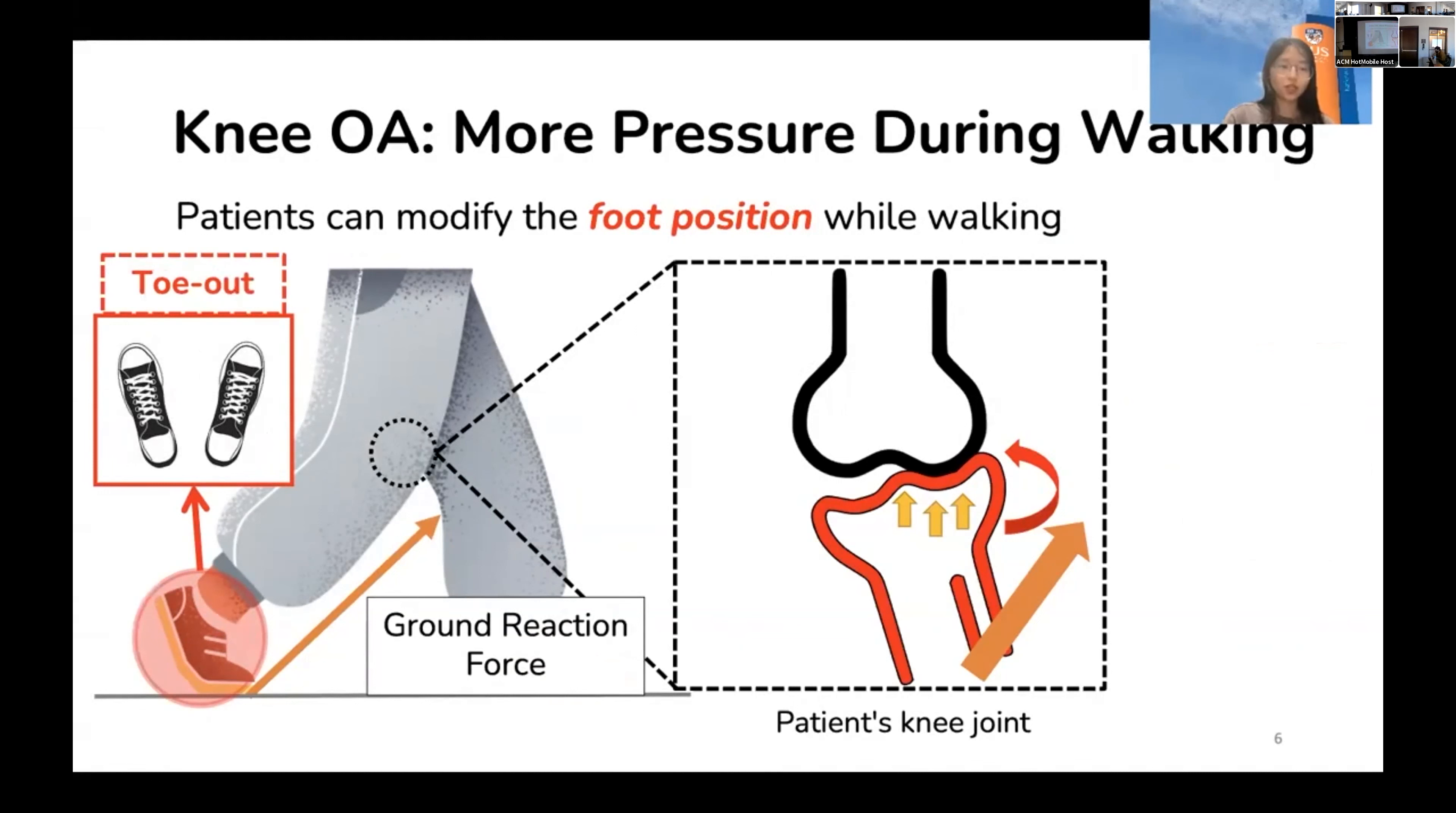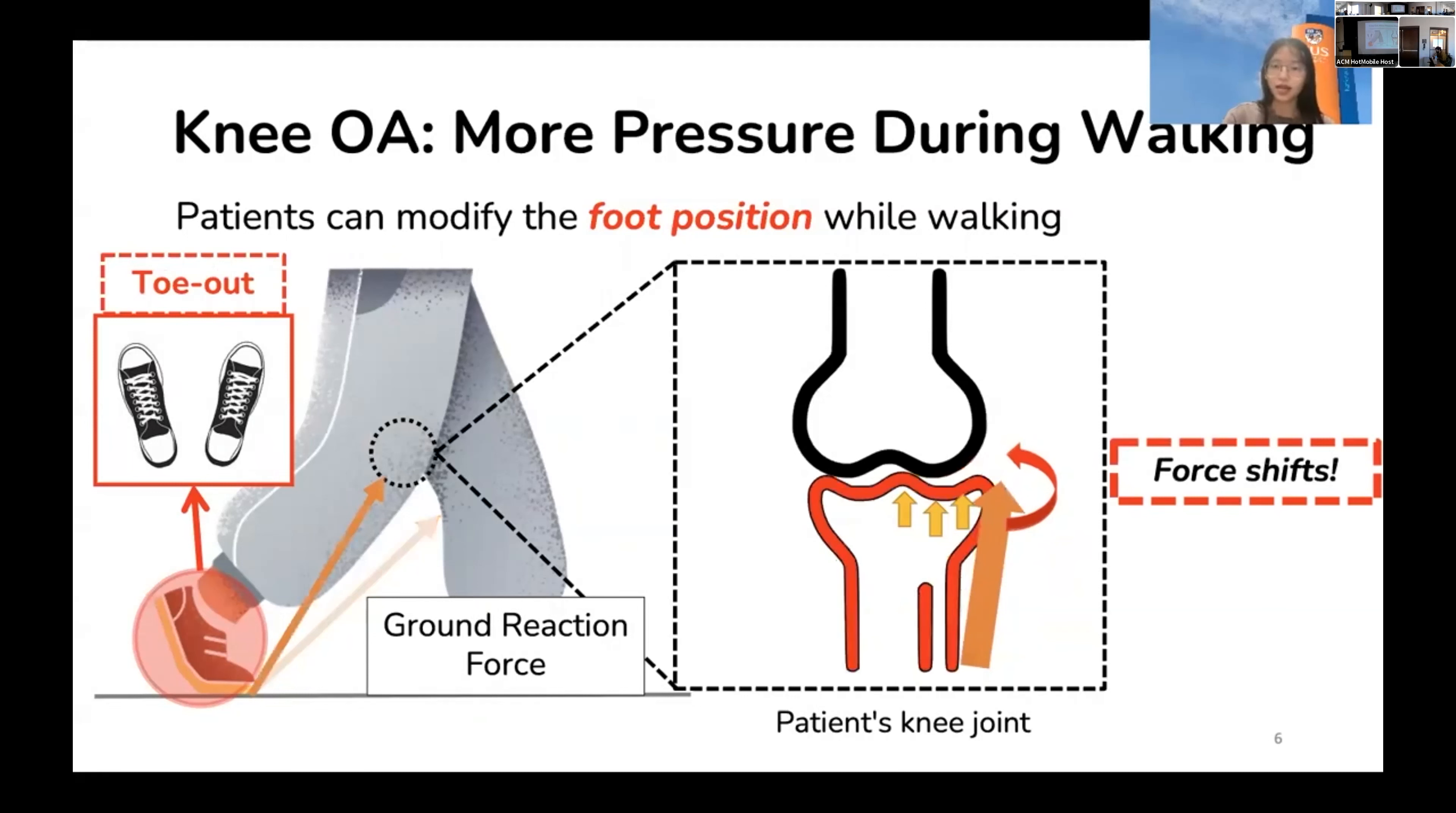When patients walk toe-in or toe-out, they're actually shifting the ground reaction force closer to the knee joint, which in turn induces less rotation. As a result, part of the pressure is shifted to the side that has more joint space and prevents the already damaged side from excessive pressure. This treatment seems super easy, right?